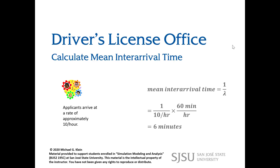The first thing we should do is calculate the mean inter-arrival time — that's the time between arrivals. Applicants are arriving at a rate of approximately 10 customers per hour. To determine the mean inter-arrival time, we need to calculate one over lambda. One over lambda is 1/10 per hour, and then we multiply by 60 minutes per hour to get six minutes. That will be the mean inter-arrival time we'll use in our Simio simulation.